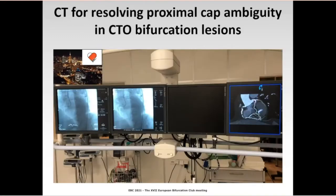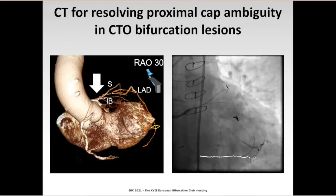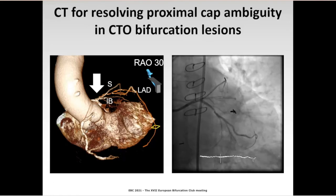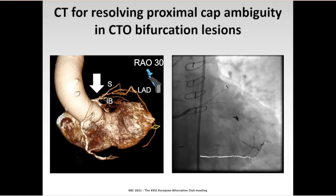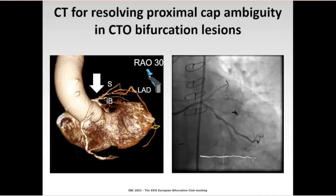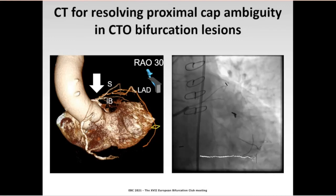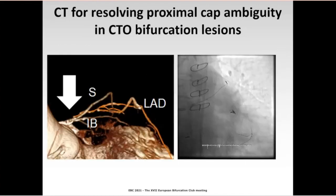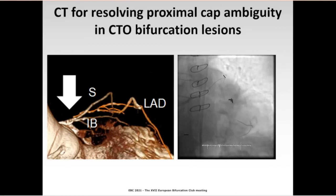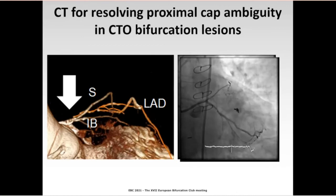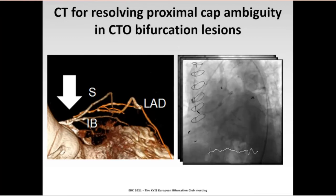Last but not least, coronary CT can be brought directly to the cath lab to assist in resolving proximal cap ambiguity in CTO intervention. Here you can see a complex CT-CTO-LAD flush occlusion in a post-CABG patient that could not be resolved by coronary angiography despite dual catheter injection. Remarkably, the guide wire kept going to the septal branch or the sub-intimal space of the intermediate branch, which was easily detected with CT co-registration and ultimately redirected into the correct course of the LAD, resulting in a good final result.